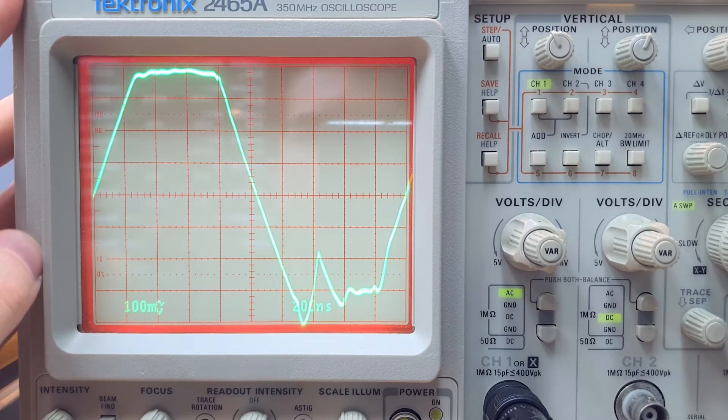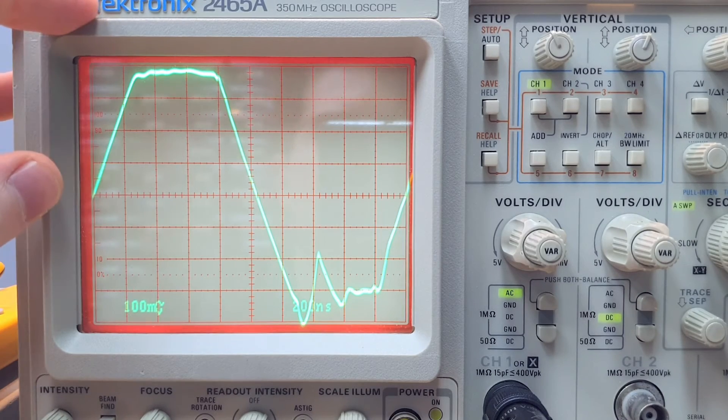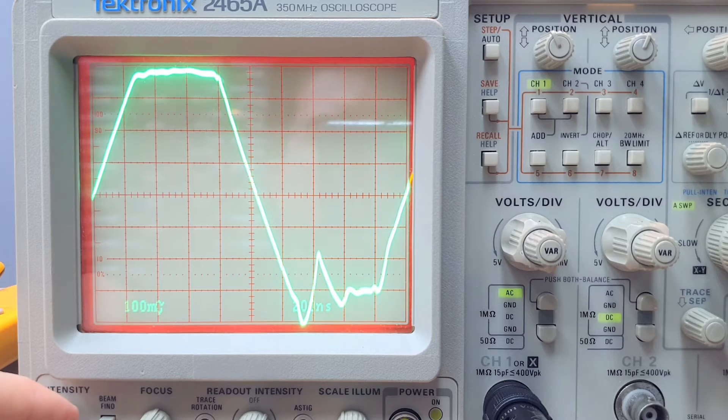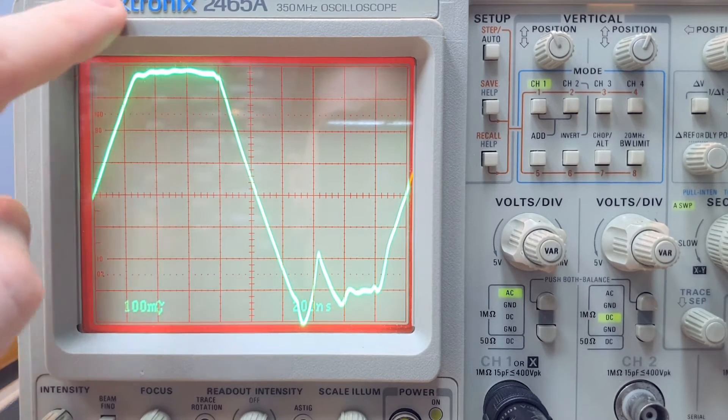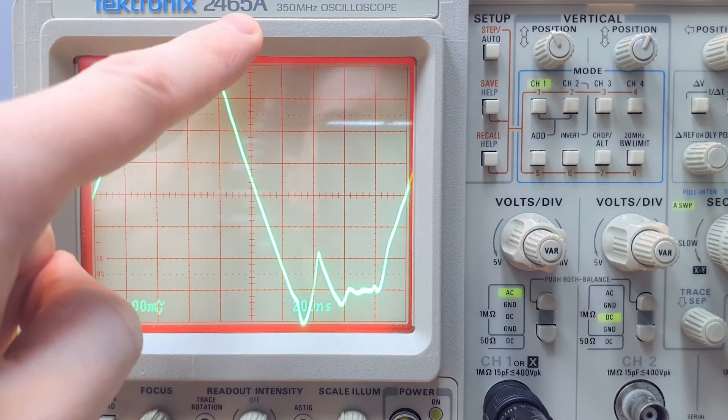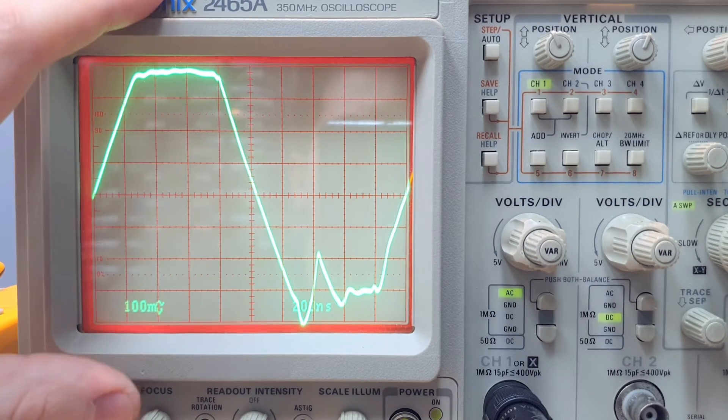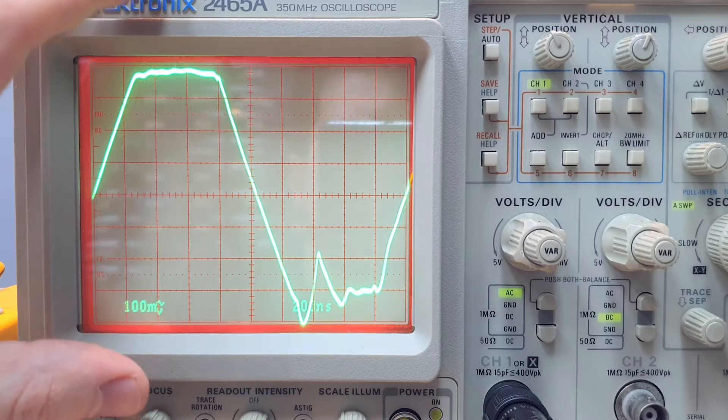Take a look on this waveform. This is why I like so much analog scopes. Take a look on this beautiful waveform here. Very clear. I recommend you to have one of these units, the Tektronix 2465, a really amazing analog unit. You're going to be surprised by the capabilities of this device here.